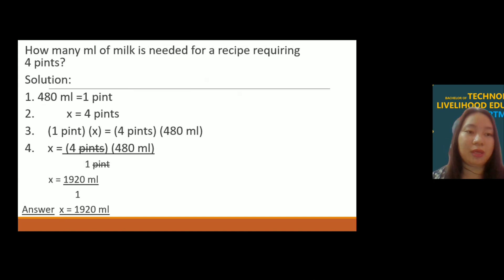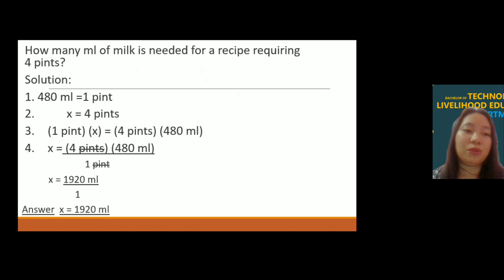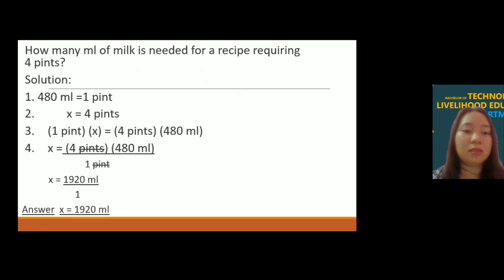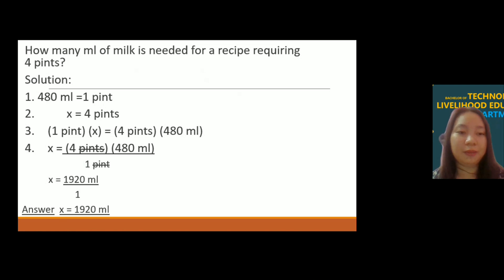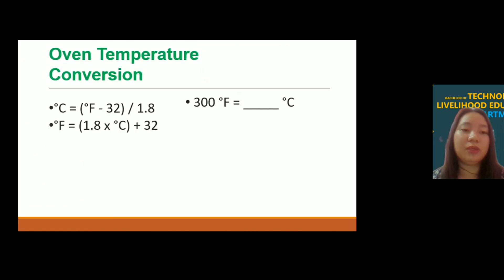Another example: How many ml of milk is needed for a recipe requiring 4 pints? The conversion factor is 1 pint = 480 ml. So x = 4 pints × (480 ml / 1 pint) = 4 × 480 ml = 1920 ml divided by 1. The answer is x = 1920 ml. Now let's move on to oven temperature conversion.